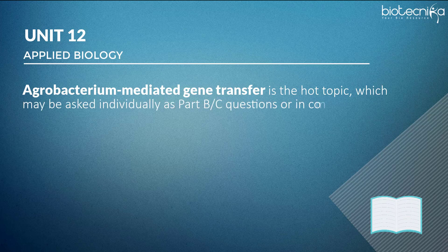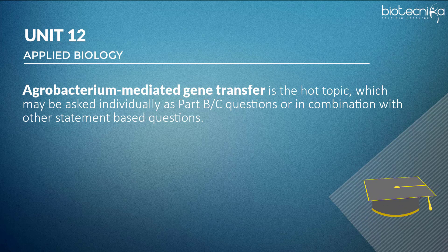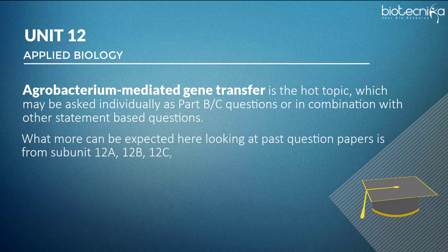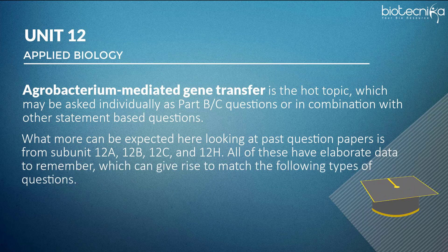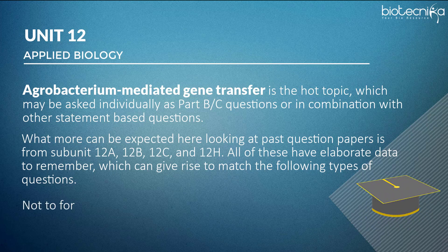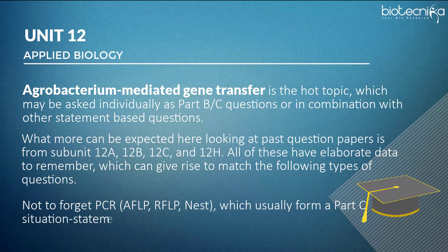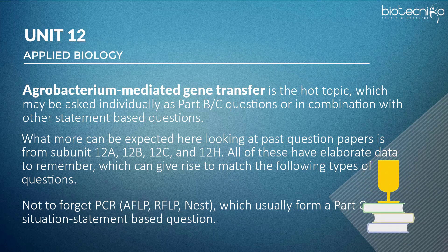Unit 12 — Applied Biology: Agrobacterium-mediated gene transfer is a hot topic which may be asked individually as Part B or C questions, or in combination with other statement-based questions. Looking at past question papers, subunits 12A, 12B, 12C, and 12H all have elaborate data to remember, giving rise to match-the-following type questions. Also notable: PCR, AFLP, RFLP, and NEST, which usually form a Part C situation or statement-based question.